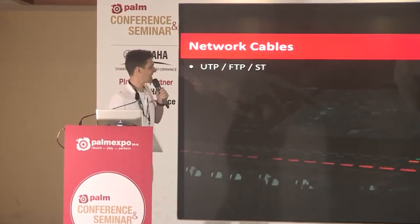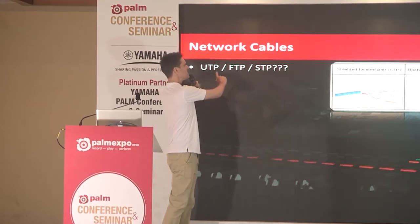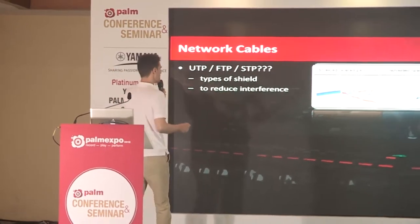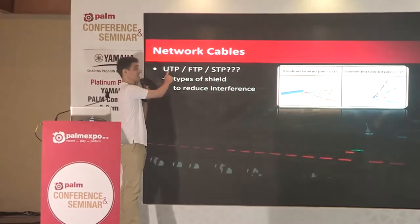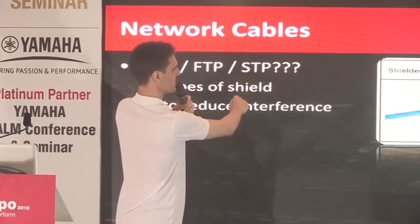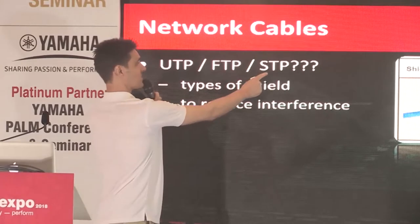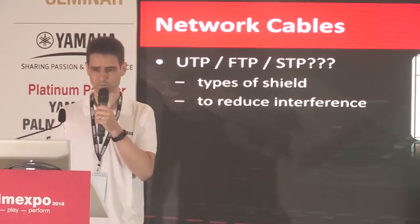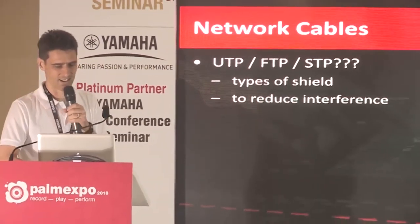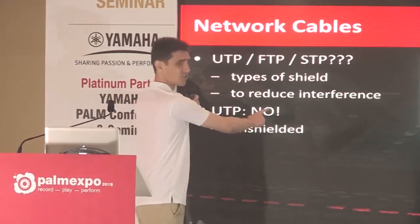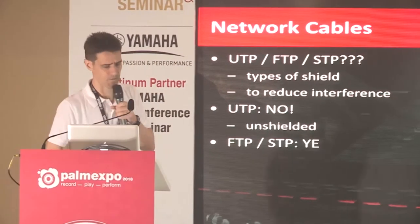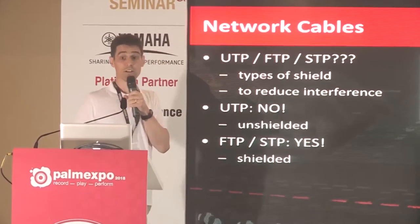Another important point about cables is the type of shielding: UTP, FTP, STP. UTP is unshielded twisted pair. FTP is foiled twisted pair. STP is sheathed twisted pair — two different types of shielding. Shielding is good to reduce electrical or electromagnetic interference. UTP we should not use — it's unshielded and can pick up too much interference. FTP or STP is good for us to use.